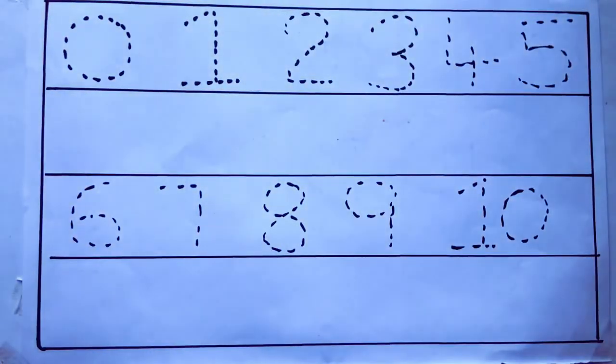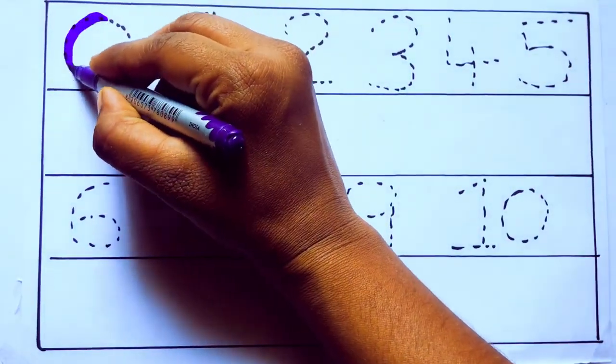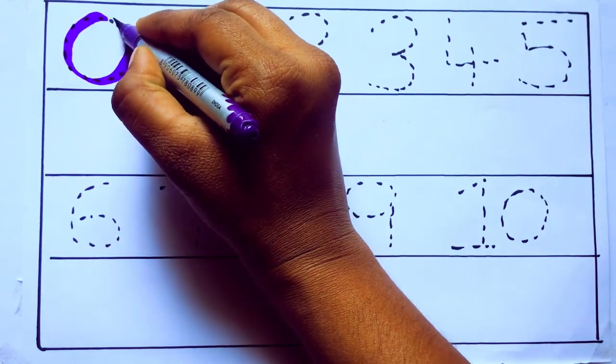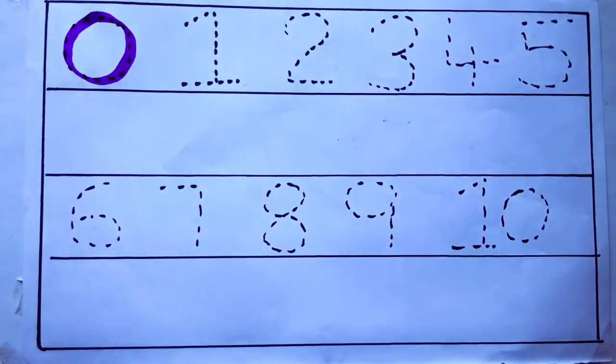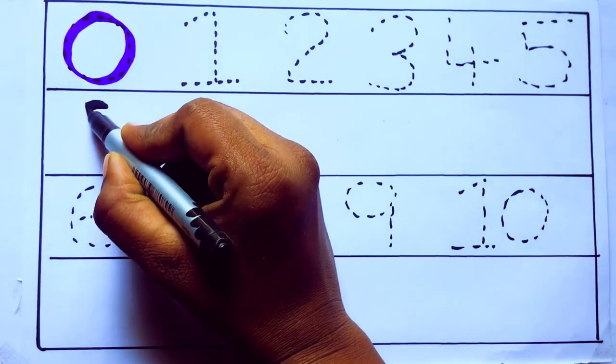Let's draw numbers. Violet color, 0. Z-E-R-O. 0.